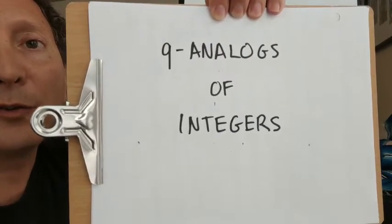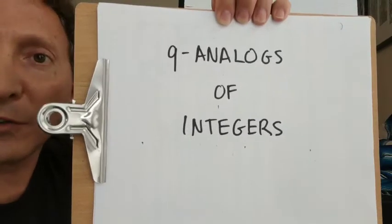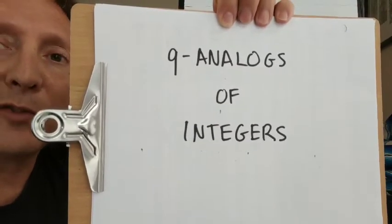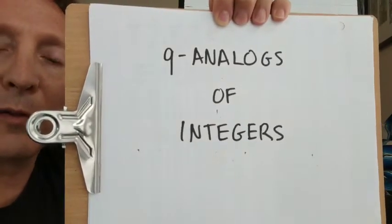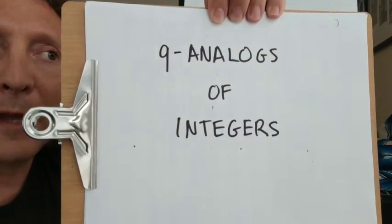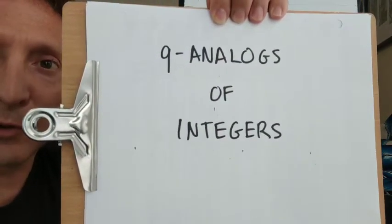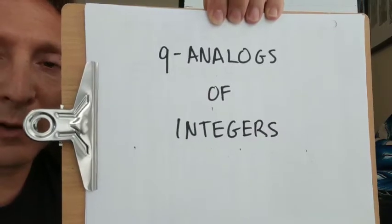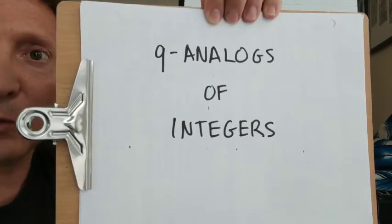The Eulerian and Sterlingian permutation statistics have nice generating functions for those numbers, and the Mahonian statistics have a nice generating function also. That's the one that I want to focus on because we're going to use it the most.